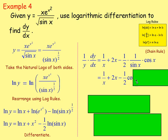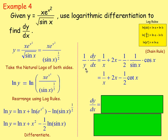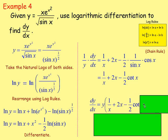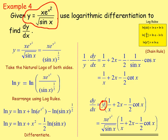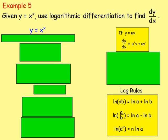Multiply both sides by y: dy/dx = y × [1/x + 2x − (1/2)·cot(x)]. Replace y with the original expression: dy/dx = [x·e^(x²) / √(sin x)] × [1/x + 2x − (1/2)·cot(x)]. That is your answer for example four.